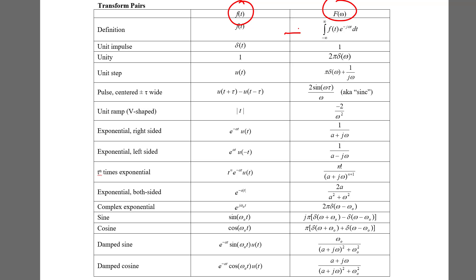The most common ones are the unit impulse. Now this looks just like what we did with the Laplace transform. The transform of an impulse is one.